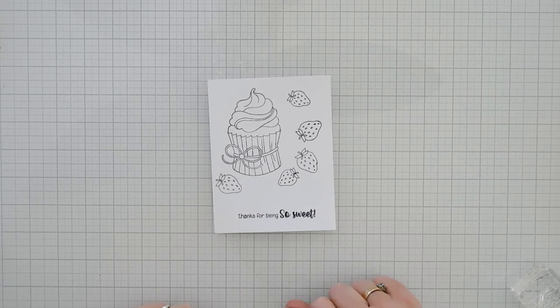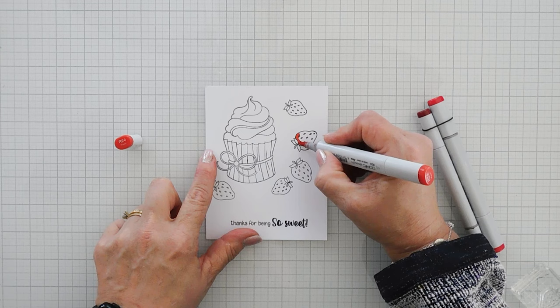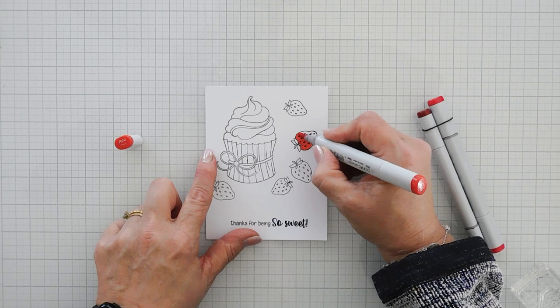I'm going to go ahead and color in my strawberries, and then I will fussy cut them out. For today's video, I'm going to skip the coloring, but I will list all the colors that I used over on my blog post if you're interested in knowing the colors that I used for today's card.